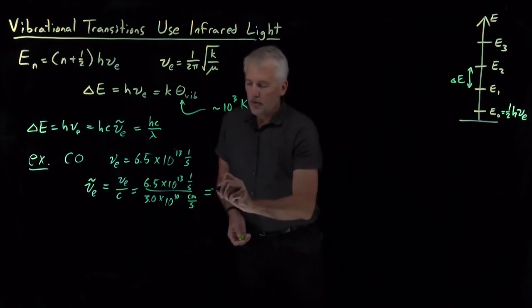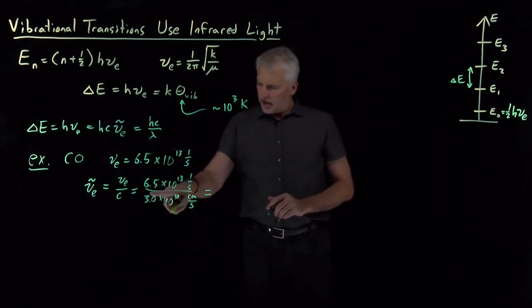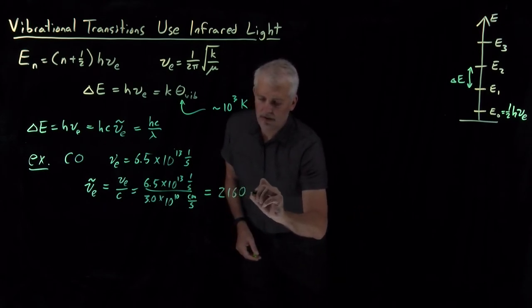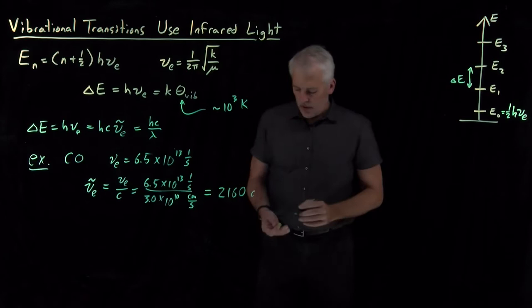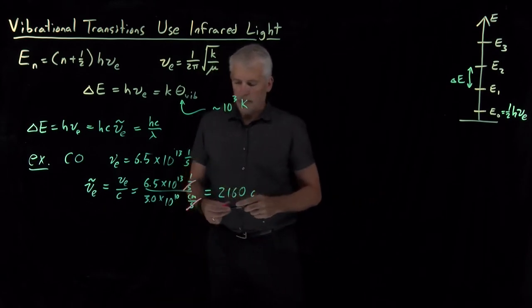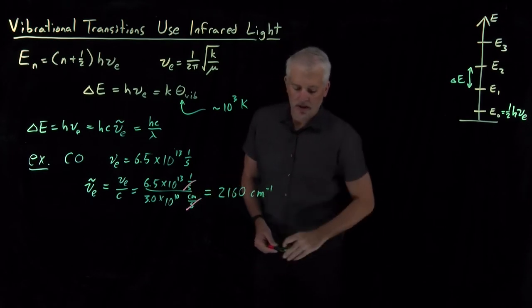So, if I do that math, this frequency divided by the speed of light, I can almost do that in my head, but to a few more sig figs. The units, 1 over seconds cancels top and bottom. I'm left with 1 over centimeters. I'll write that as centimeters to the negative 1.